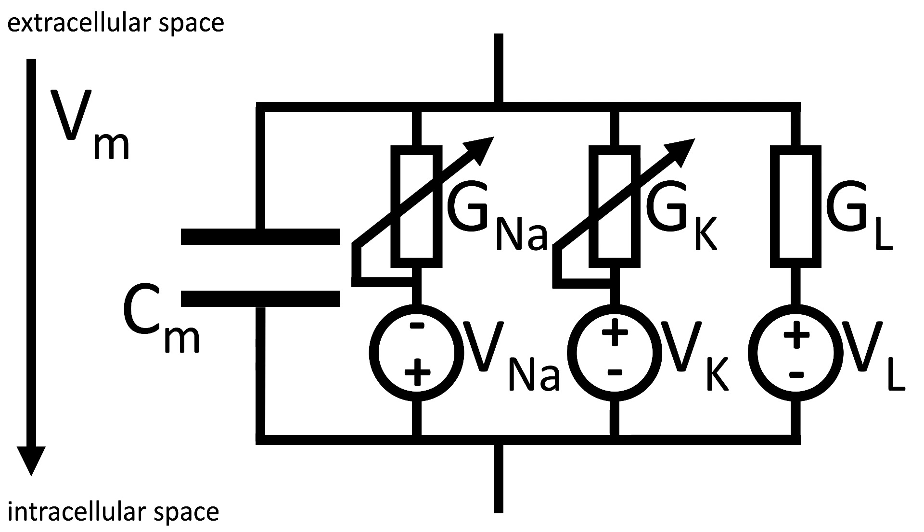It means that we have a variable resistance, so a variable conductance. You will notice that the leak channel has no such arrow. This is due to the fact that the leakage current is assumed to be a sum of all background currents and its conductivity is taken as constant.